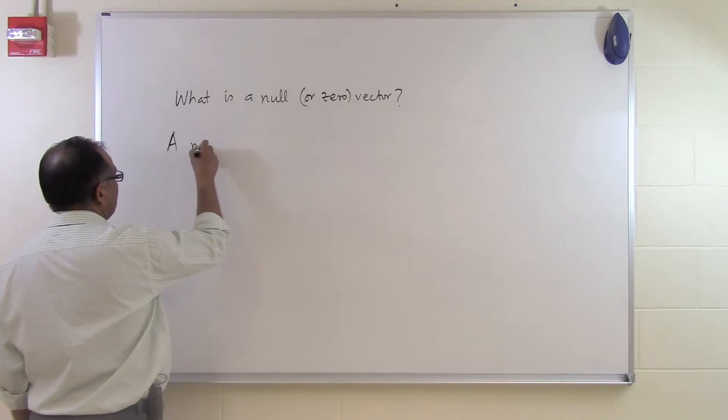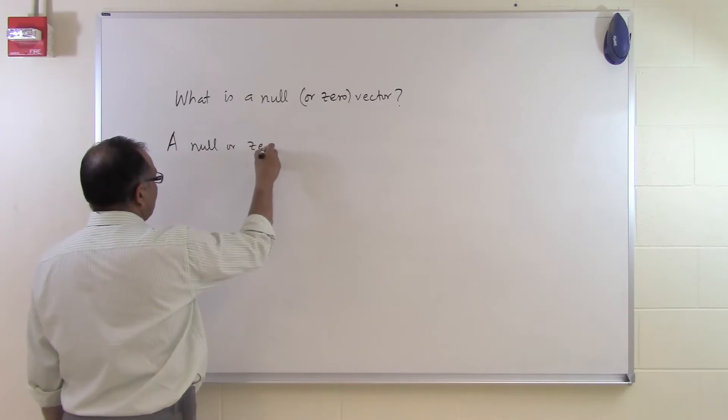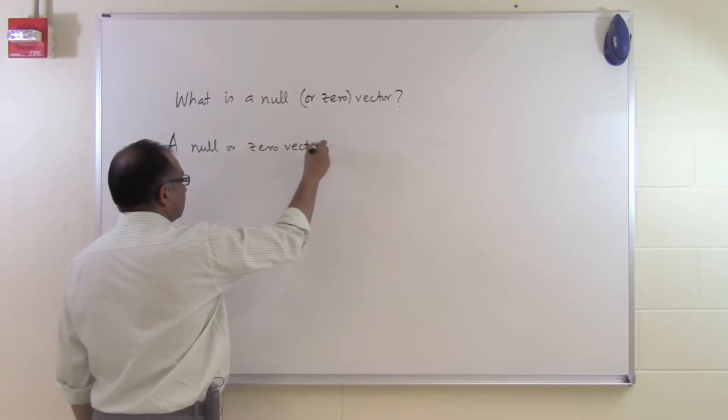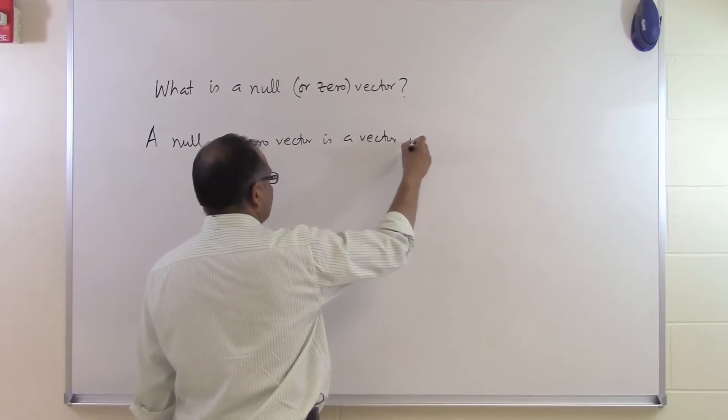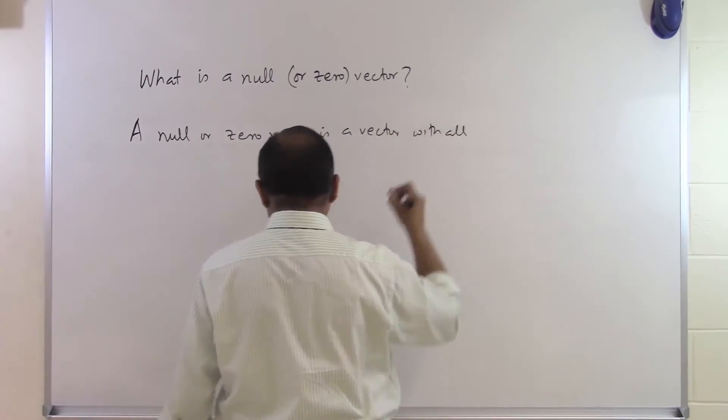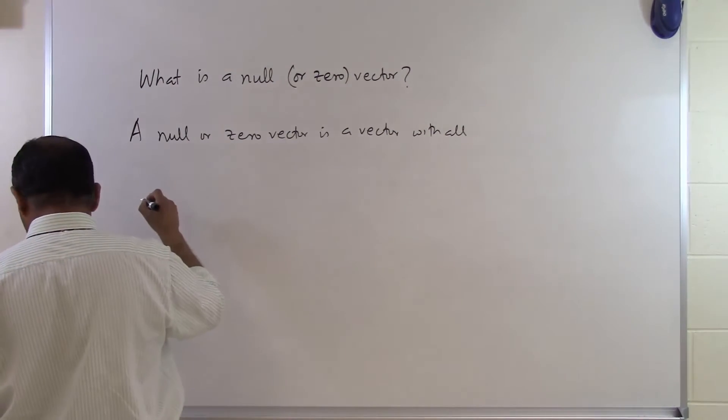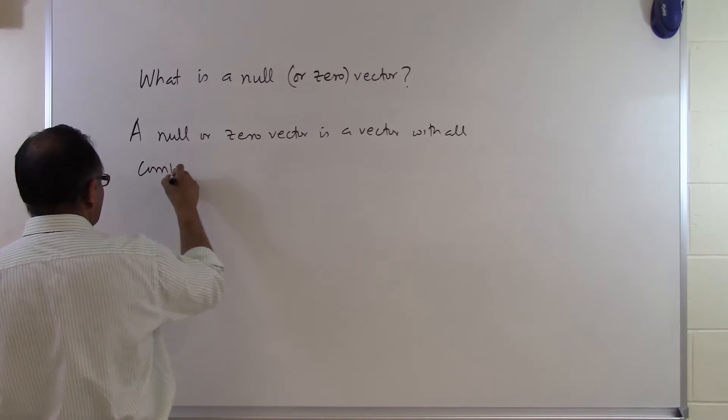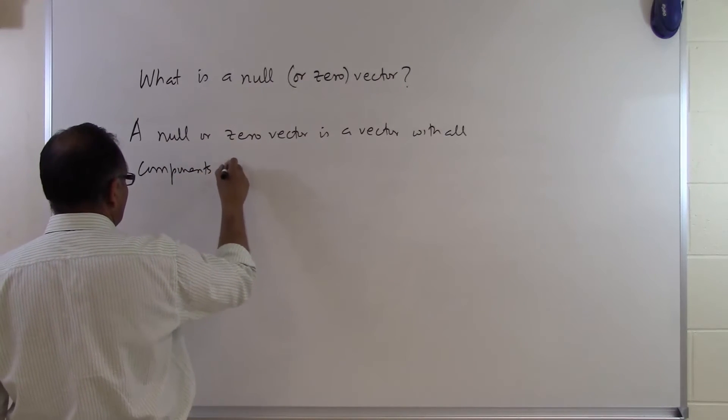A null or zero vector is a vector with all components being zero.